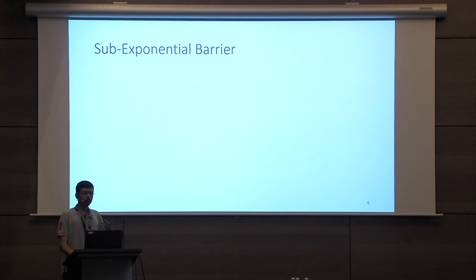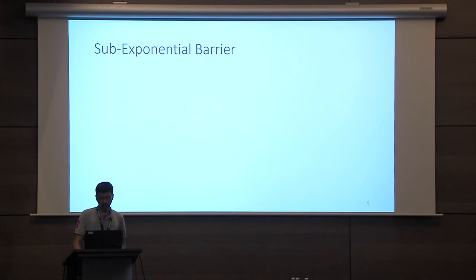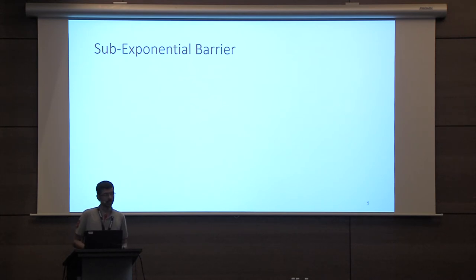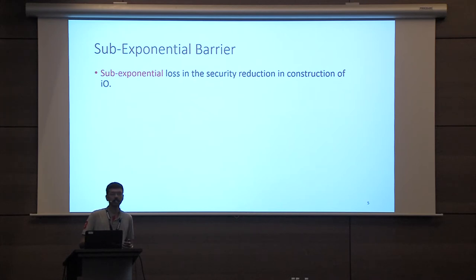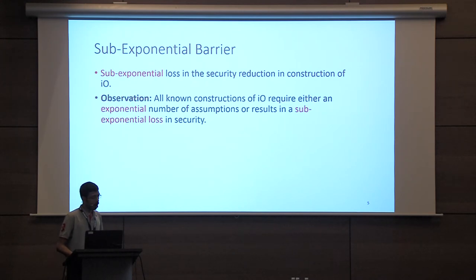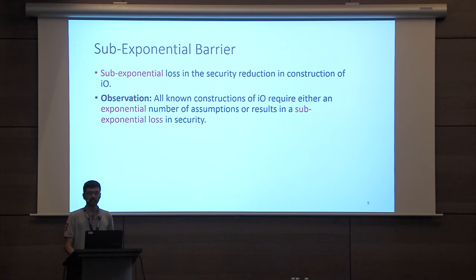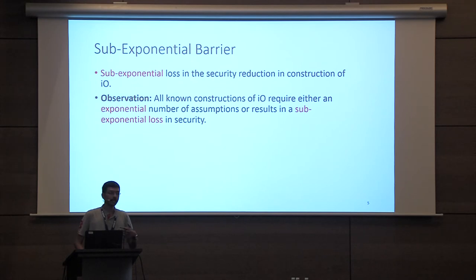If we were to use IO to build cryptographic primitives or in certain applications, we would run into what we call the sub-exponential barrier. Intuitively, this sub-exponential barrier refers to the sub-exponential loss in the security reduction that incurs within the construction of IO. All known constructions of IO either require an exponential number of assumptions — essentially one assumption per each pair of functionally equivalent circuits — or incur a sub-exponential loss in security if based on a small number of assumptions.